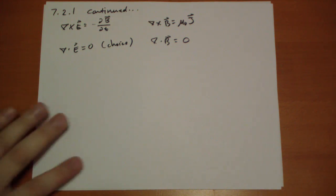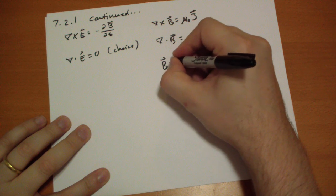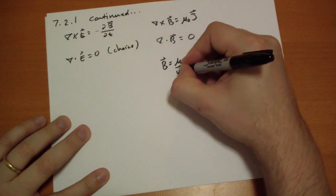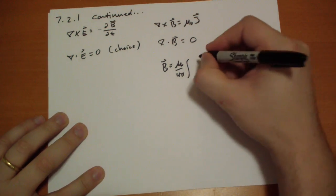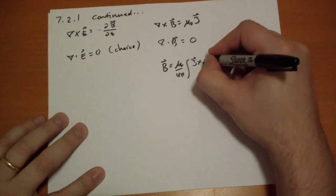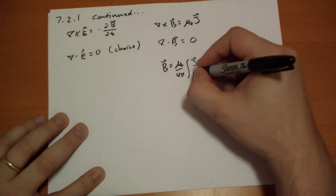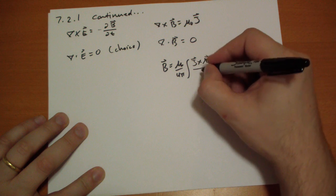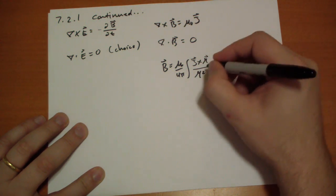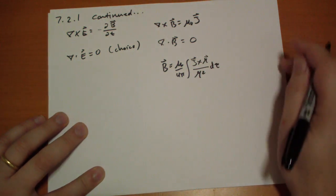And so we have the Biot-Savart law: mu naught over 4 pi integral of the current cross the difference between whatever integrating and the current position that we want to calculate for, over that distance, times the volume differential.